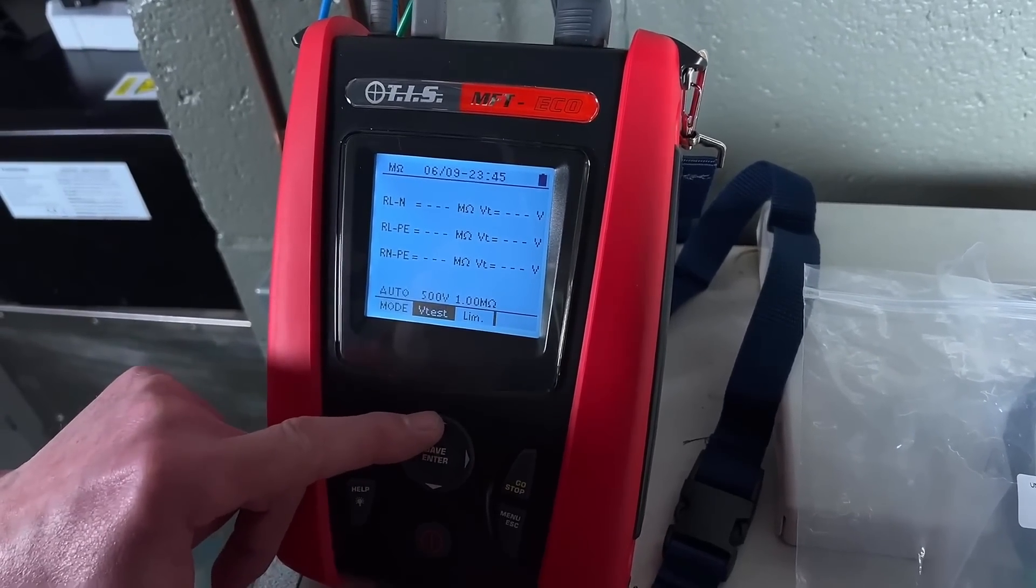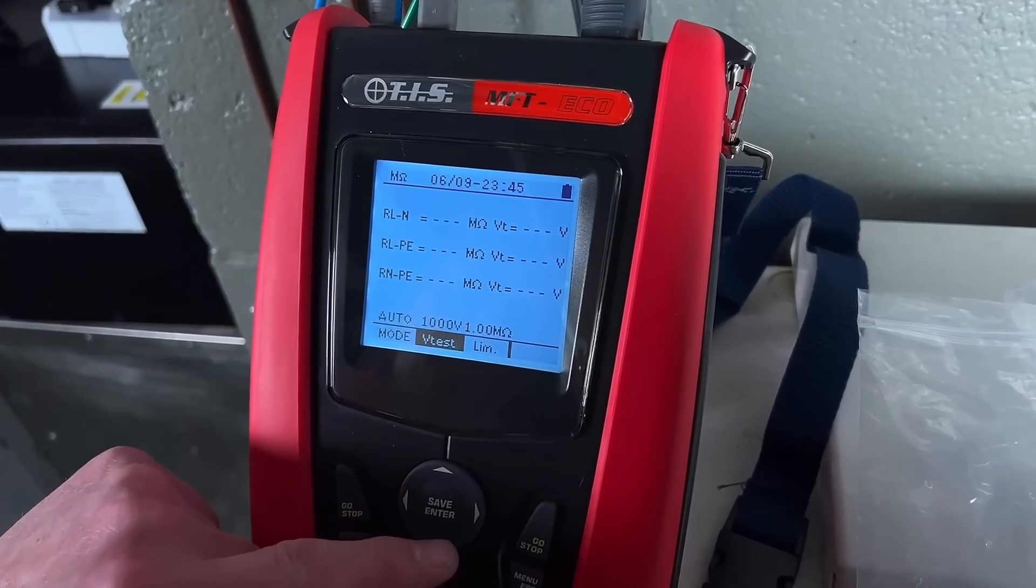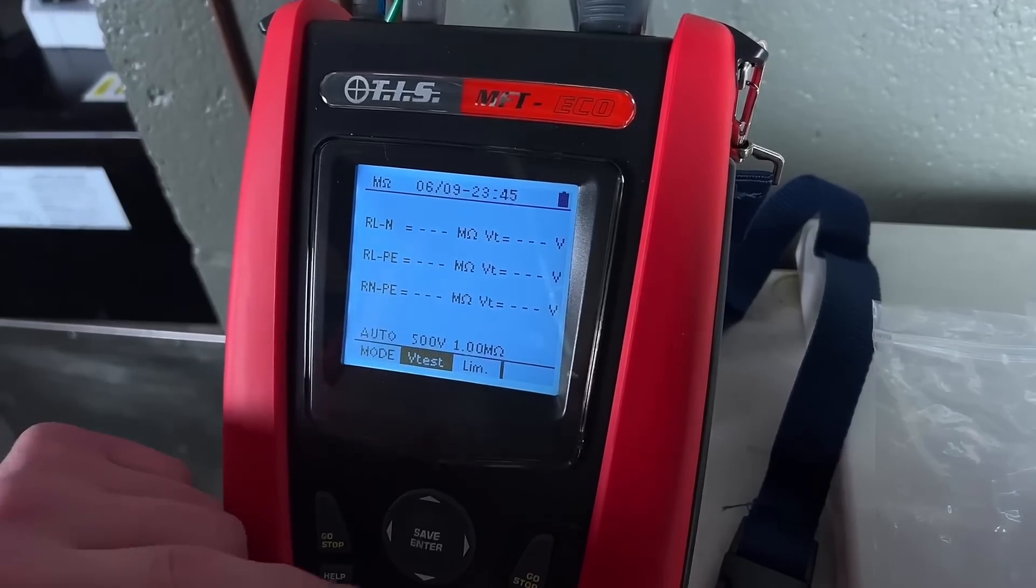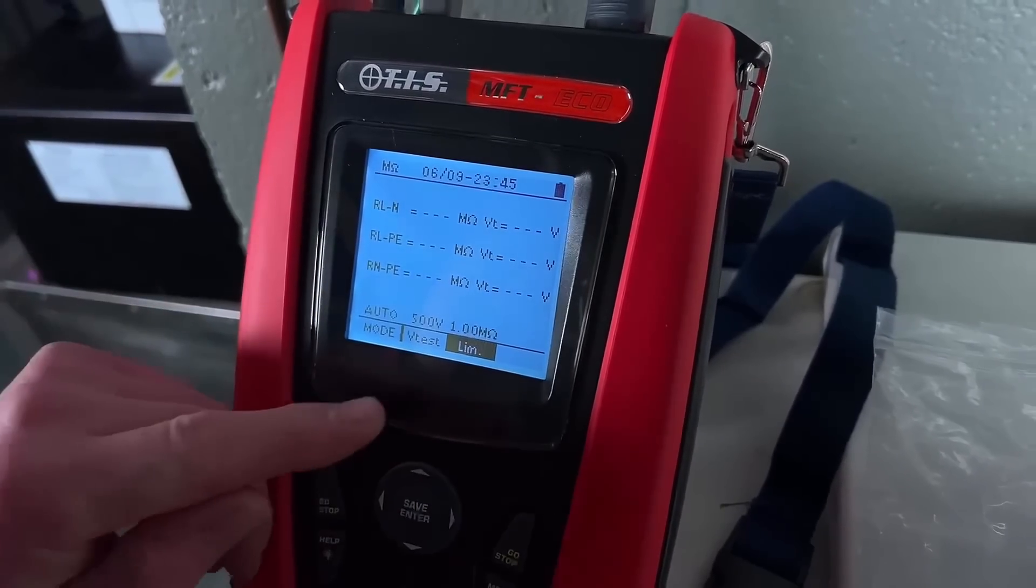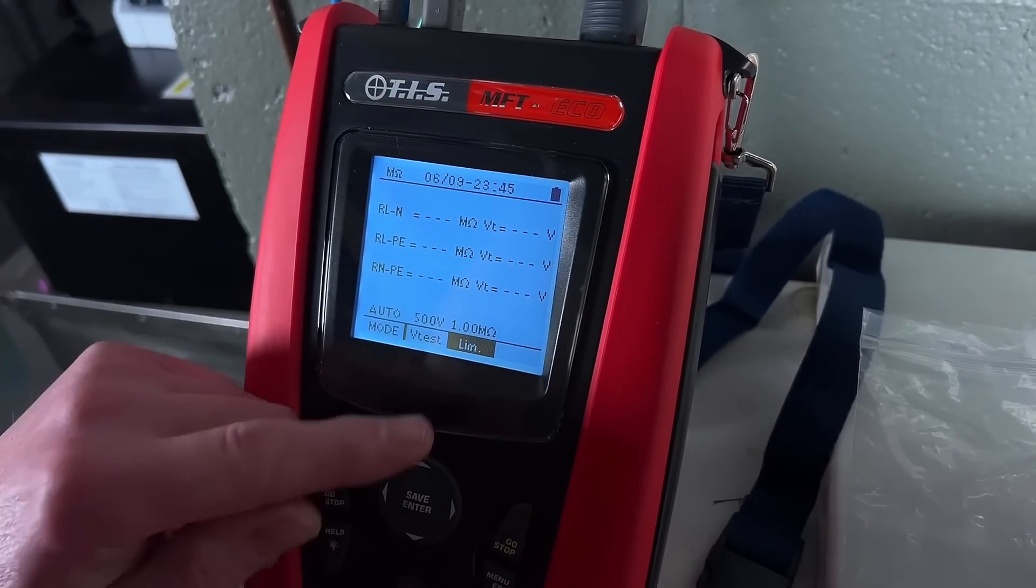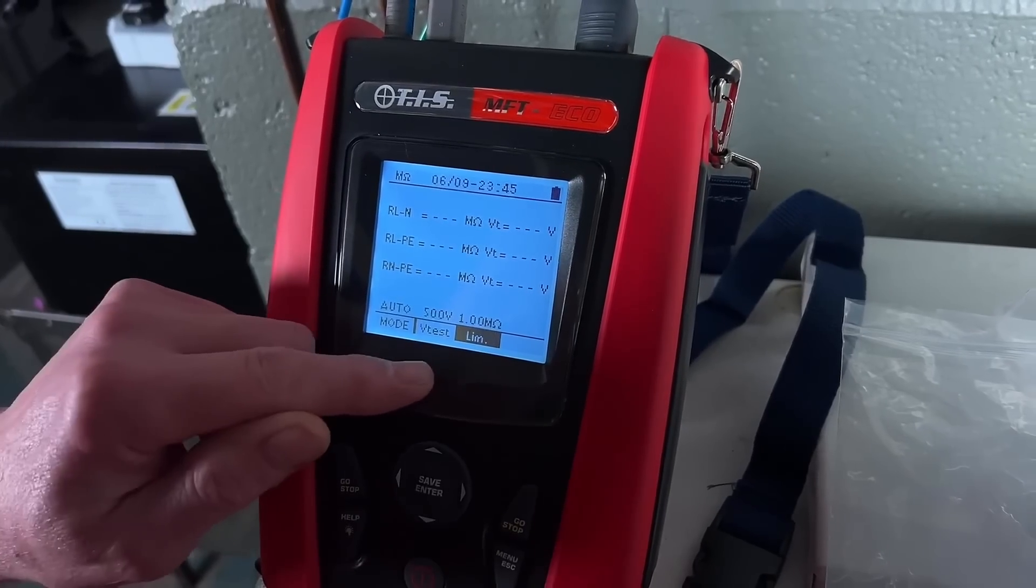I've also set it here to 500 volts, that's the test voltage in DC. I could have been at 250, could have been at a thousand, and anywhere in between. Then I've got it here set to what I want it to be, its pass value, and I've got that as one mega ohm. If I've got lower than one mega ohm, it will come up as a fail.